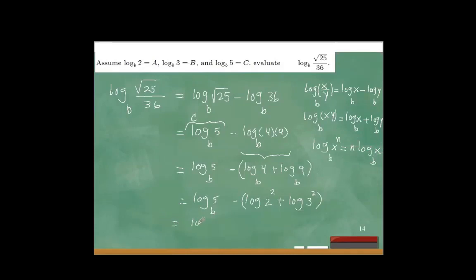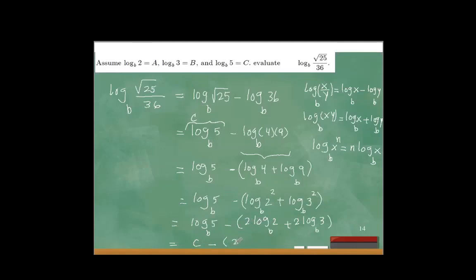So I can write this as log base B of 5 minus, moving the 2 in front of log of 2, that's 2 log of 2, plus moving the 2 in front of log of 3. Log of 5 equals C, log of 2 equals A, log of 3 equals B. So distributing the minus, this whole thing equals C minus 2A minus 2B.